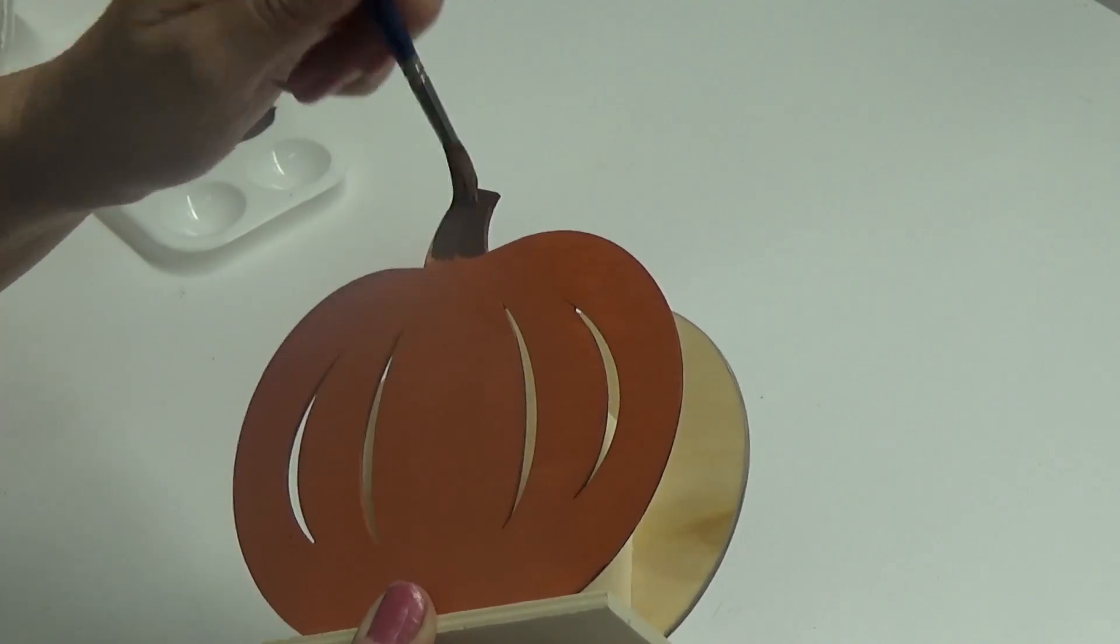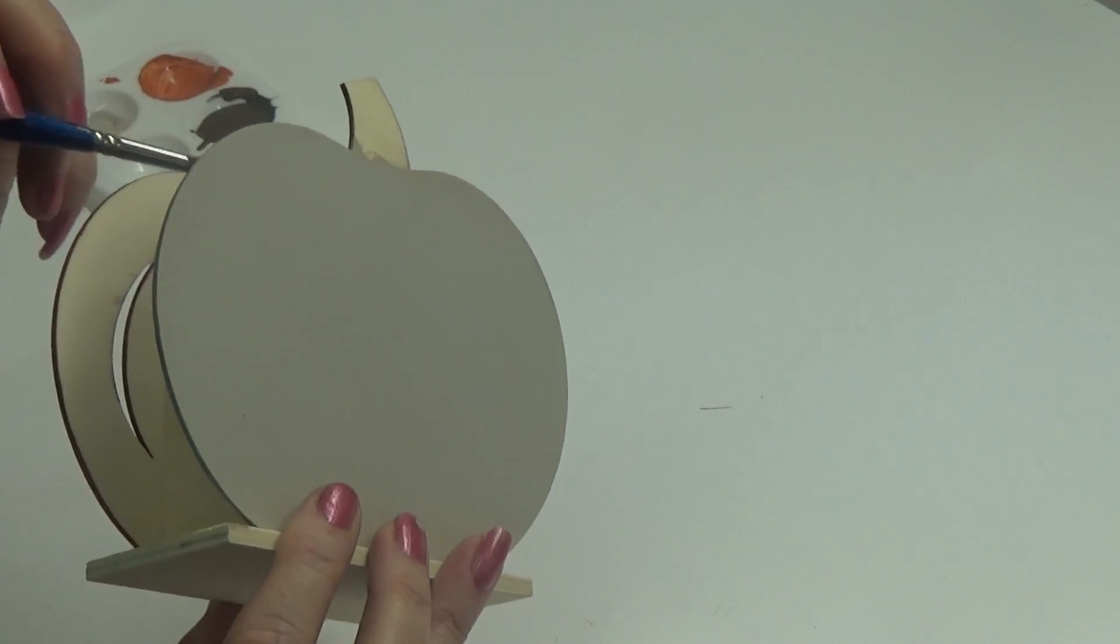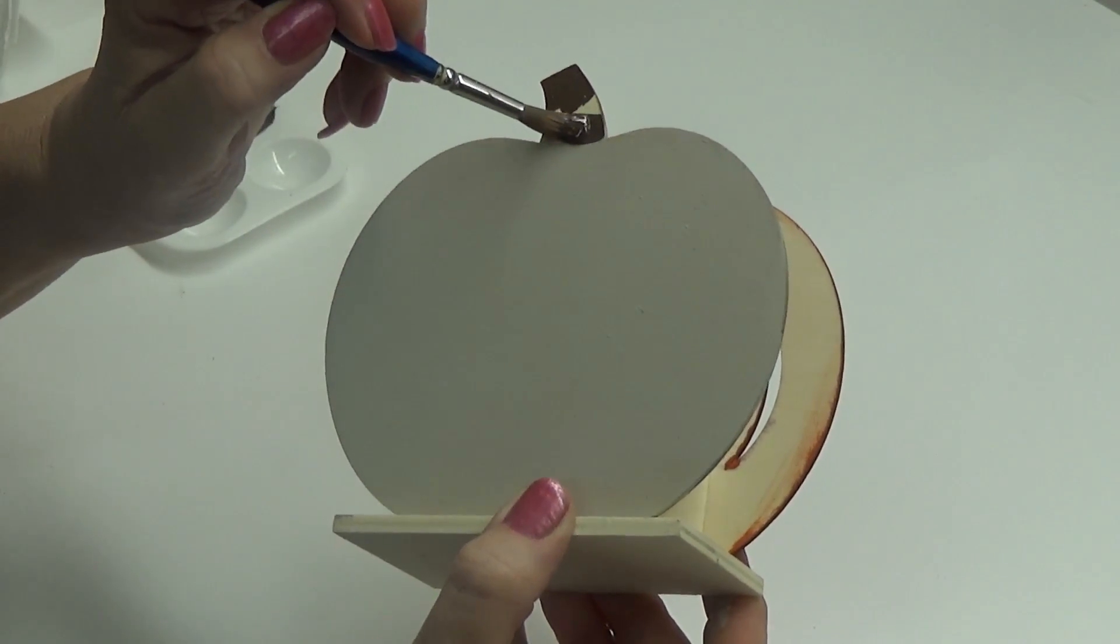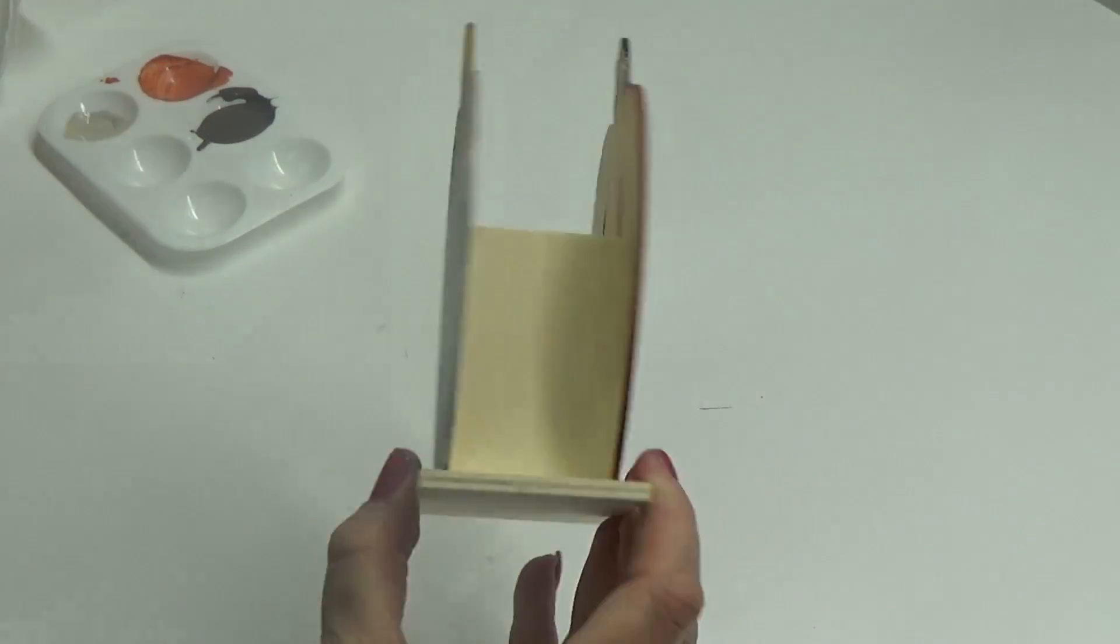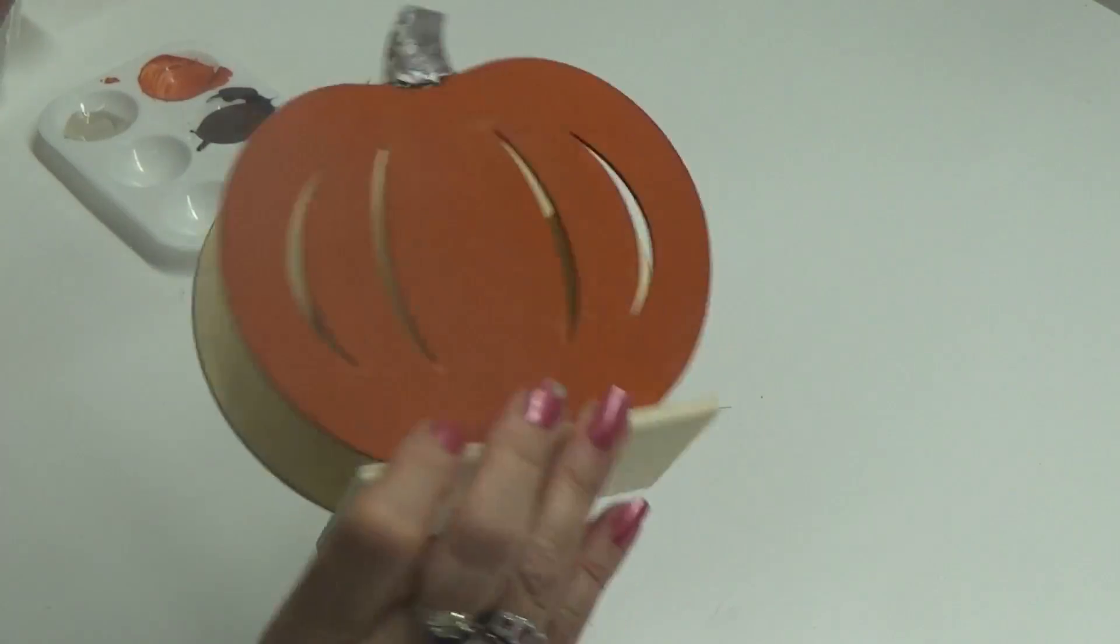Right here I'm using a brown chalk paint to do the stems. Do the edges of the stems too if you want the edges painted. If not, I'm not painting on the back sides, I'm just going to stain all of that.